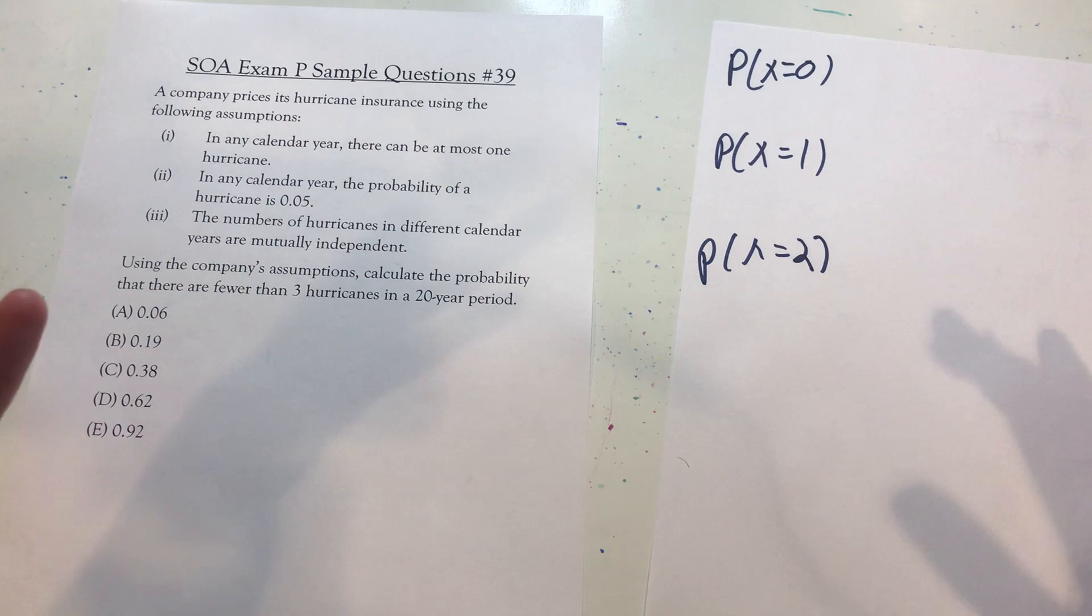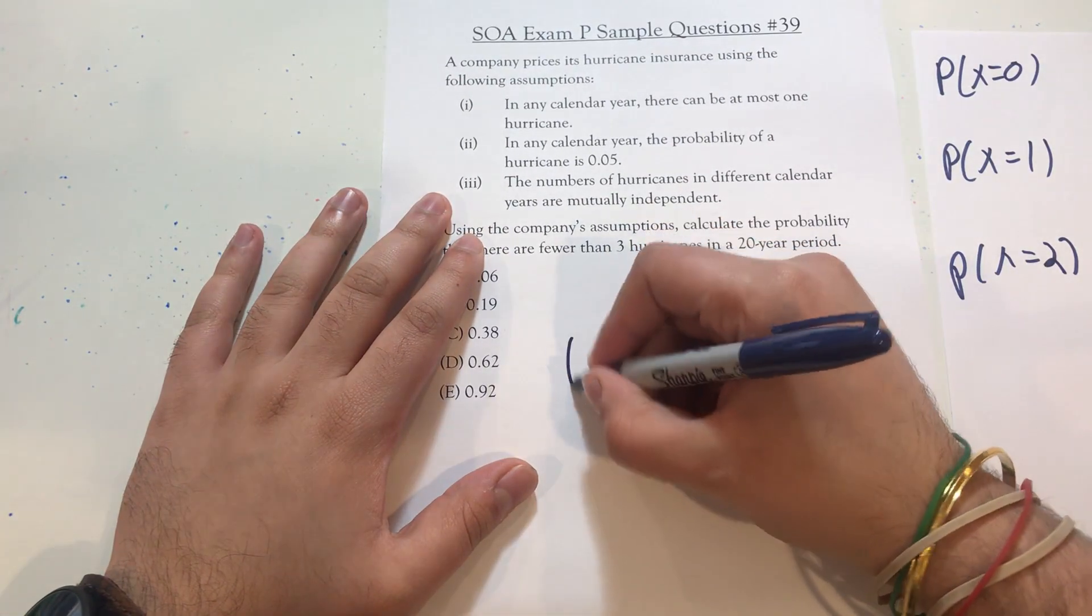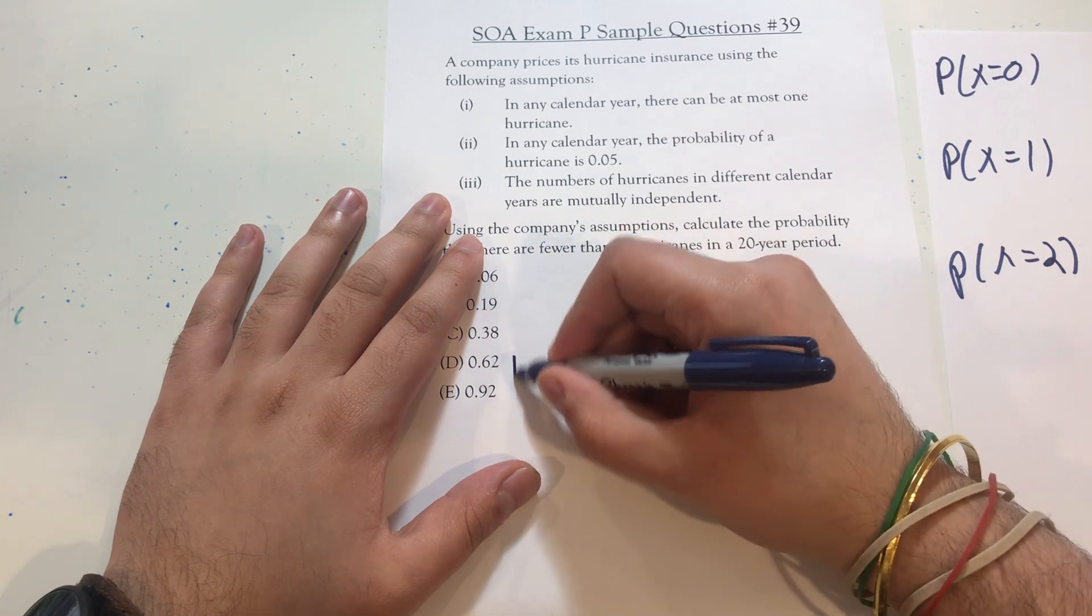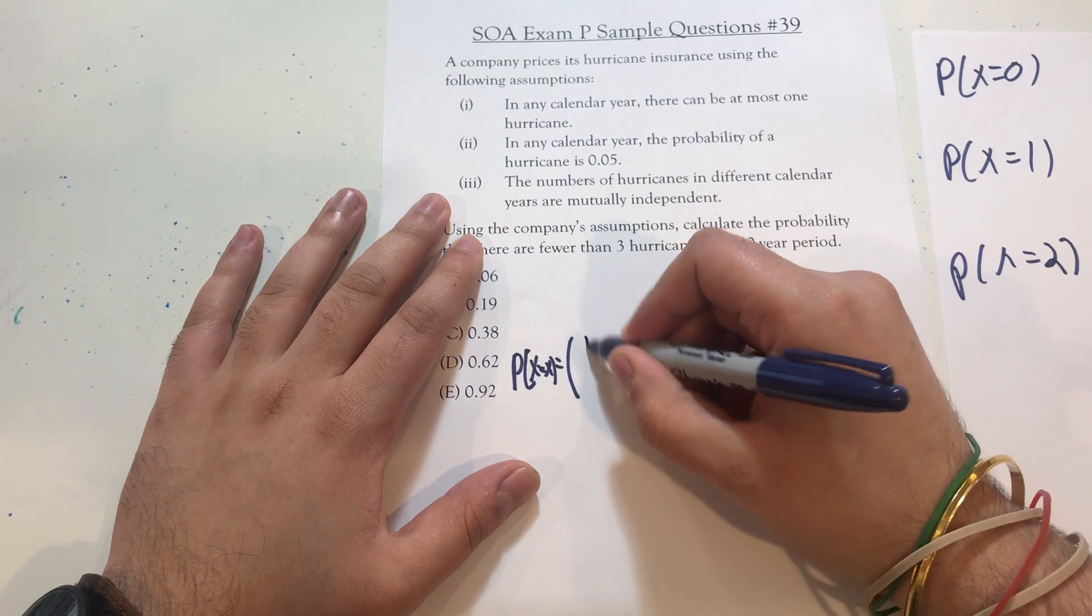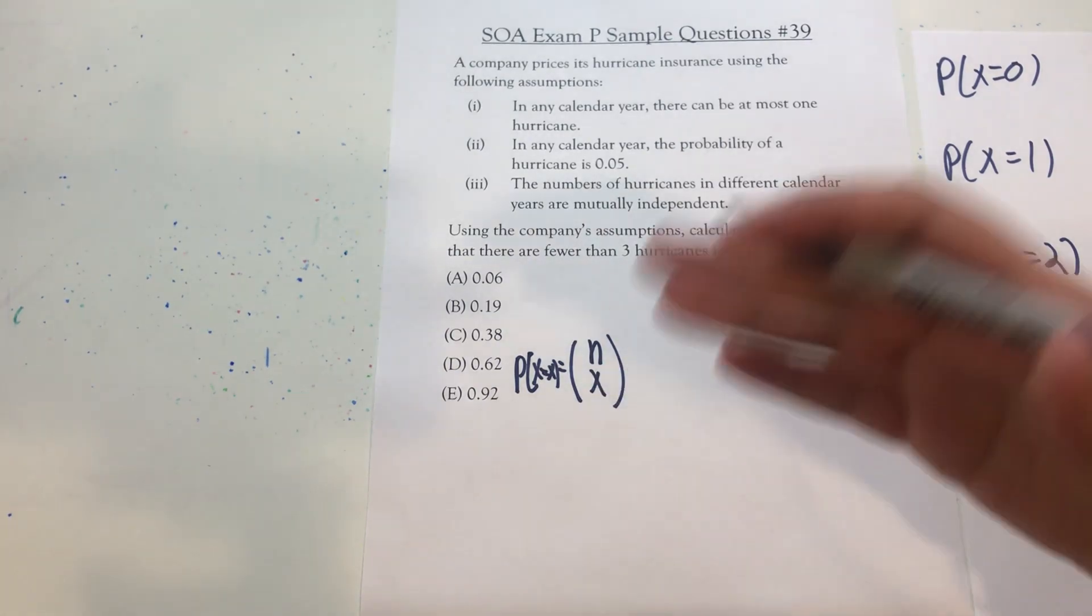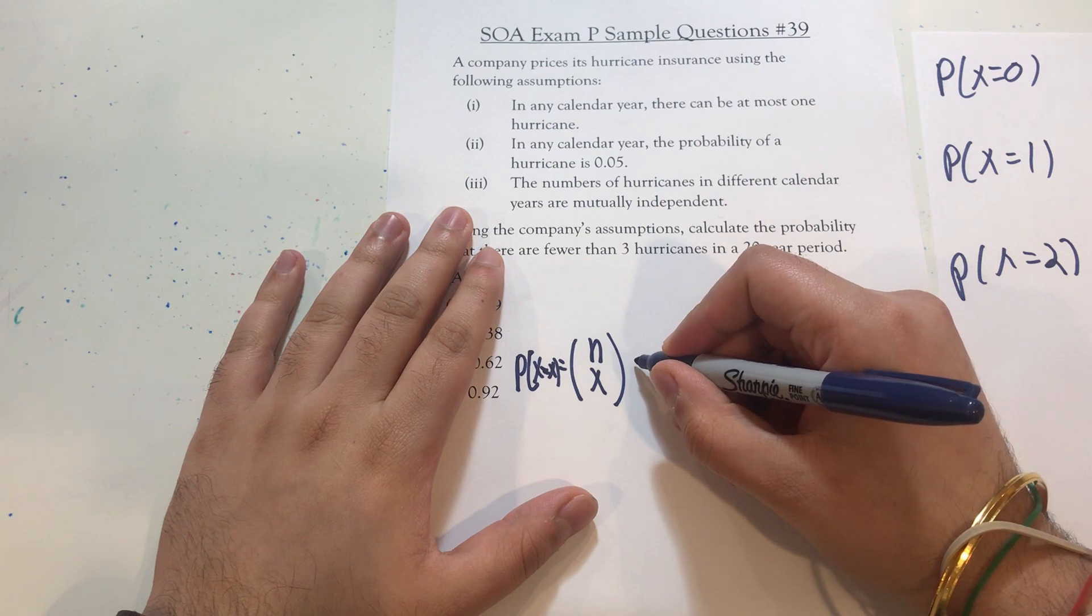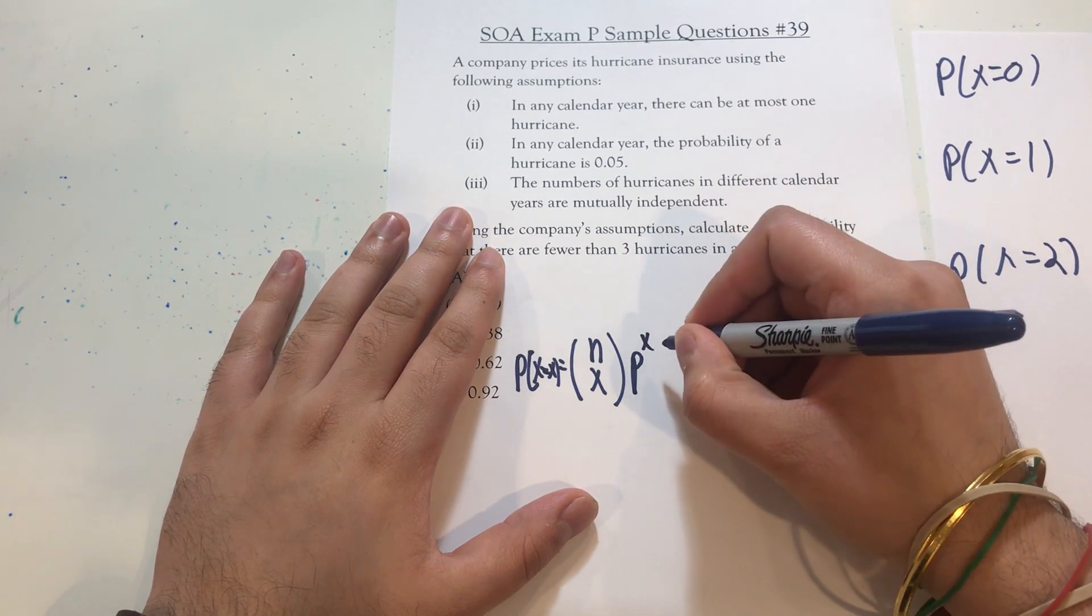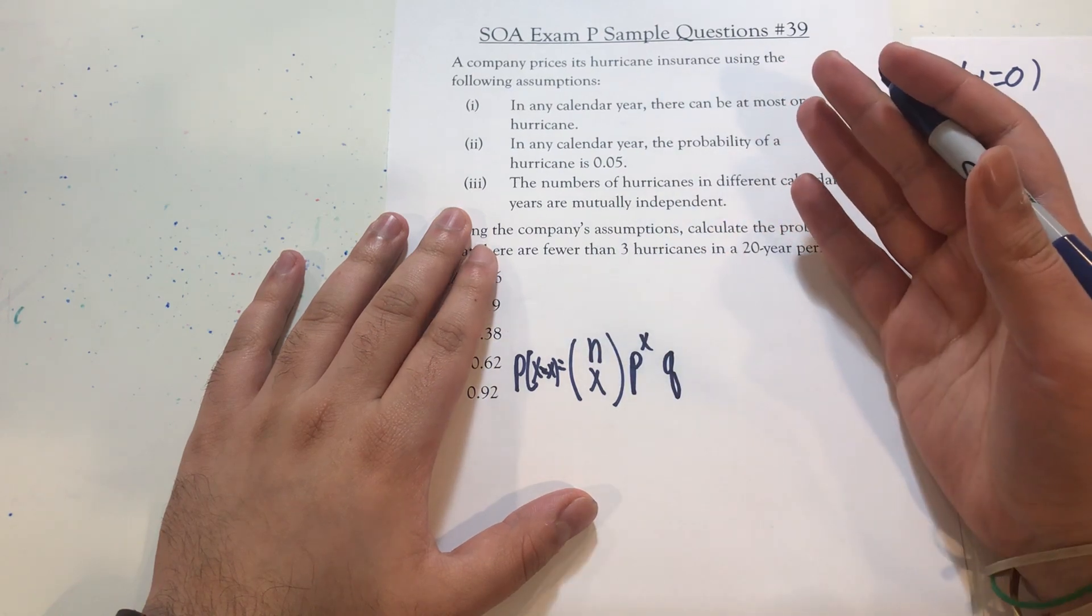Okay, you should be familiar with the equation for a binomial random variable for finding the probability. And that is, I'll write it like this: probability of X equal to x is equal to n, which is the number of trials, choose x, which is the probability of one happening, two happening, three happening, four successes, five successes, that kind of thing, times the probability p of the success raised to the x power times 1 minus p raised to the n minus x power.